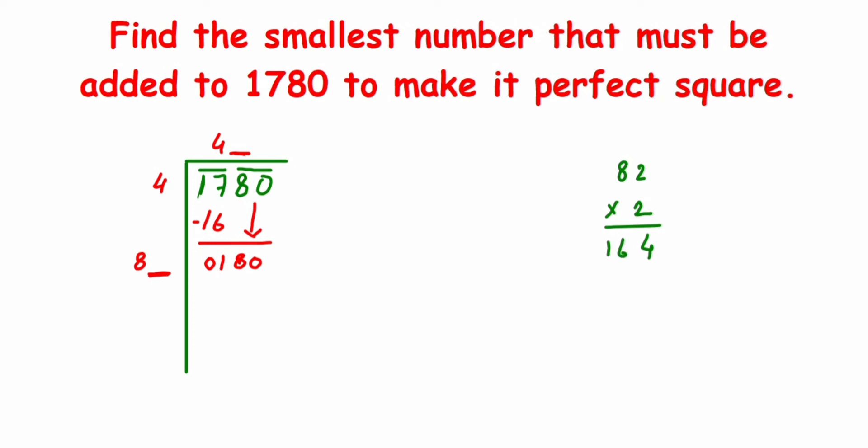Let us try with 3. So 83 multiplied by 3 is 249. This number is greater, so I'll go with 164, that is 82 twos. I'll write it down here: 82 multiplied by 2 is going to give me 164.